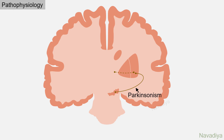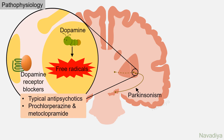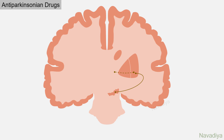We don't know exactly how and why these neurons undergo degeneration, but there are various theories. One theory says metabolites of dopamine produce free radicals which cause damage to the nerve. Drugs that block dopamine receptors — for example antipsychotic drugs and antiemetic drugs like prochlorperazine and metoclopramide — can also cause Parkinson's-like disease. Remember, till date we have no drug that can reverse or even stop the degeneration of neurons in the nigrostriatal pathway.